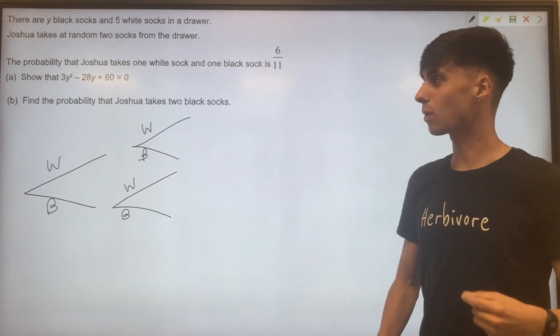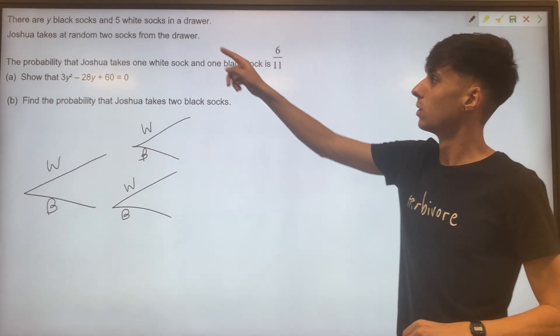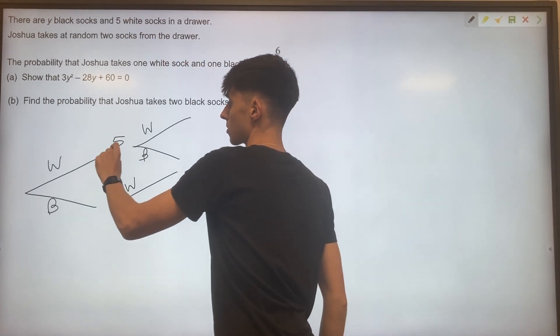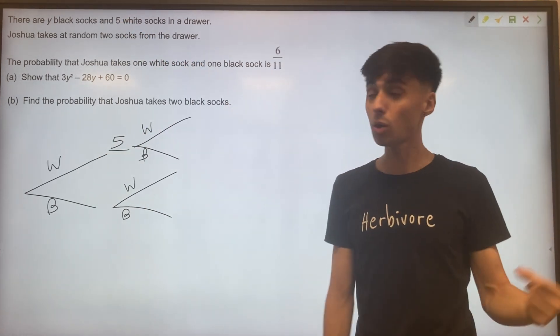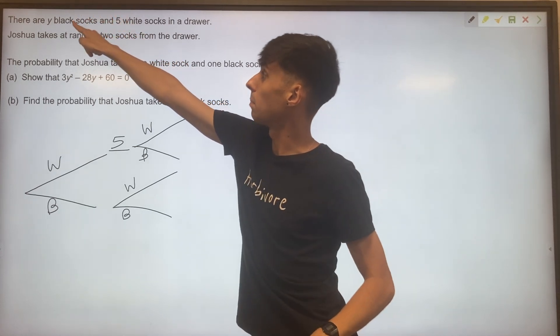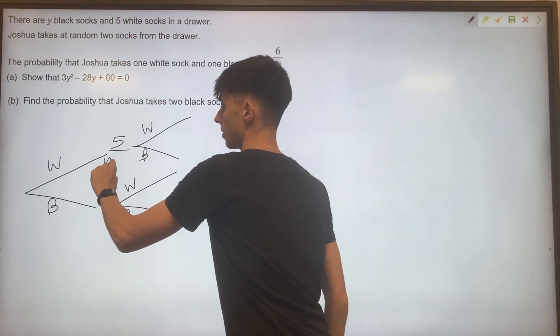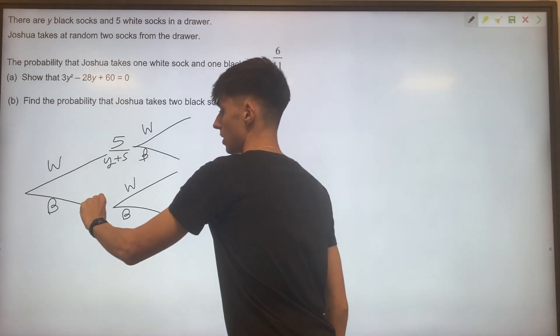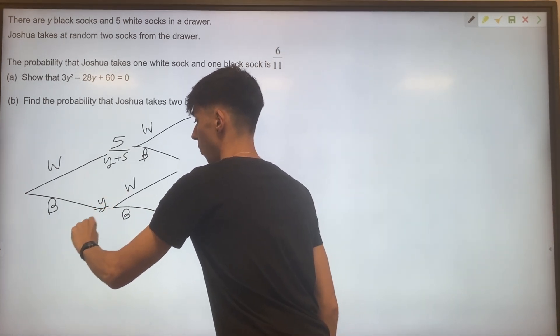And thinking about the relevant fractions in there for probability, well, white, there's five white socks out of a total of y plus five from our white and our black. So five out of y plus five. And for the black socks, it's going to be y out of y plus five.